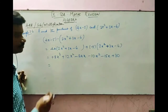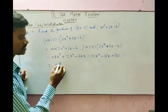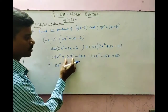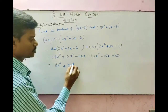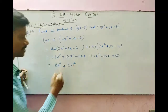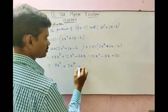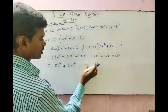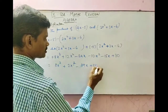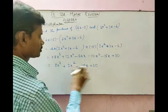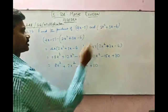Now add the like terms. The x cubed term 8x cubed has no pair, so write it as it is. Then 12x squared and minus 10x squared have different signs — subtract them and put the greater number's sign. Then minus 24x and minus 15x both have the same sign, so add them: minus 39x. Plus 30 comes as it is. So this is the way of multiplying a binomial with a trinomial.